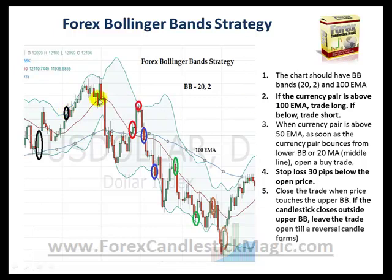Now if you look here, this is another area where the trade could have been opened, but this candle basically touches the upper target right away, so this is not a valid setup. But here the currency pair again bounces from the 20 moving average — the red line — and hits the upper band for another 35 pips profit. Now here, the price has come below the 100 moving average but at the same time it has bounced and hit the 20 moving average, so this is another potential area to open a trade, which could have been closed right here.